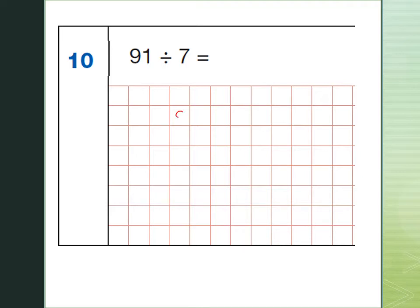So, I write 91 nice and neat here in my grid. Here's the division sign, using a bus stop, and 7 goes on the outside.